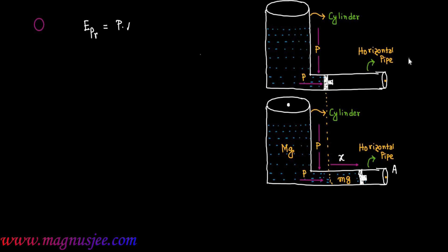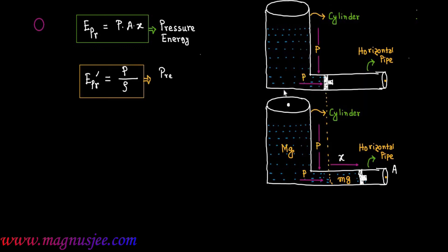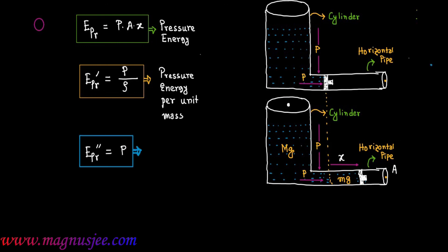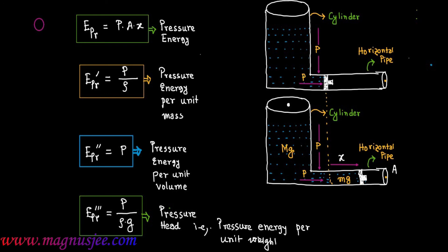Finally, we get four types of pressure energy: EPR equals PAx, which is the pressure energy; EPR prime equals P divided by rho, which is the pressure energy per unit mass of liquid; EPR double prime equals P, which is the pressure energy per unit volume; and EPR triple prime equals P divided by rho G, which is the pressure head — also known as pressure energy per unit weight of liquid displaced through the horizontal pipe connected to the bottom of the cylinder.